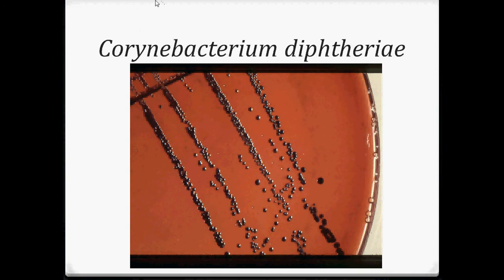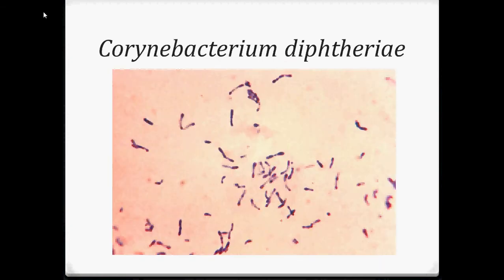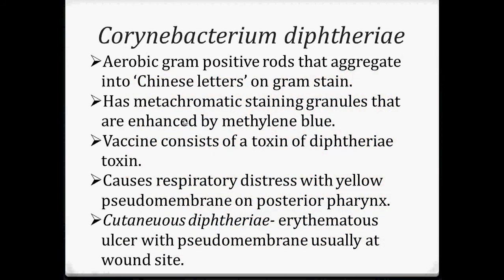Corynebacterium diphtheriae colonies growing on blood tellurite agar — you can see in this diagram their colonies appear black. Under microscopic view, Corynebacterium diphtheriae are club-shaped, aerobic gram-positive rods that aggregate into Chinese letters on gram stain. They have metachromatic staining granules that are enhanced by methylene blue.